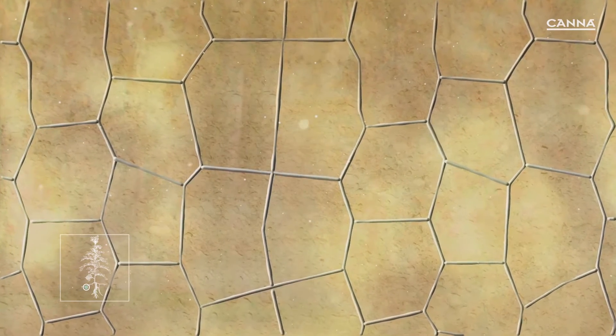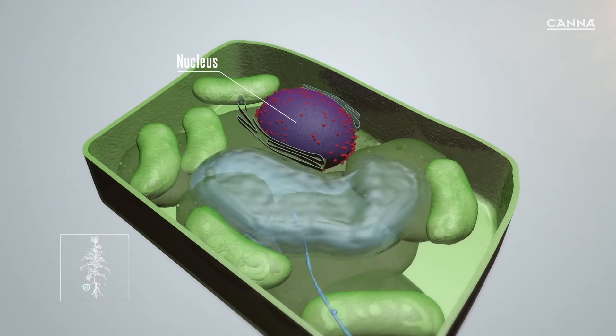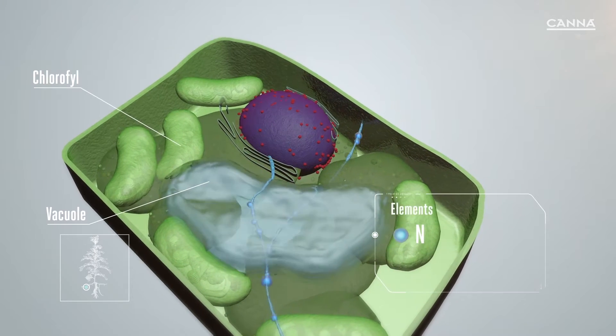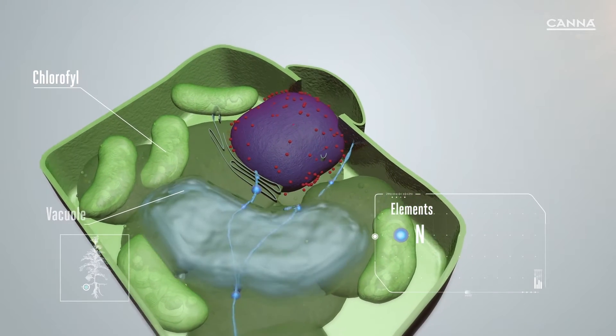The multiplication of cells starts with the division of the cell's nucleus, which contains the genetic information. Nitrogen is required when the DNA proteins replicate themselves.